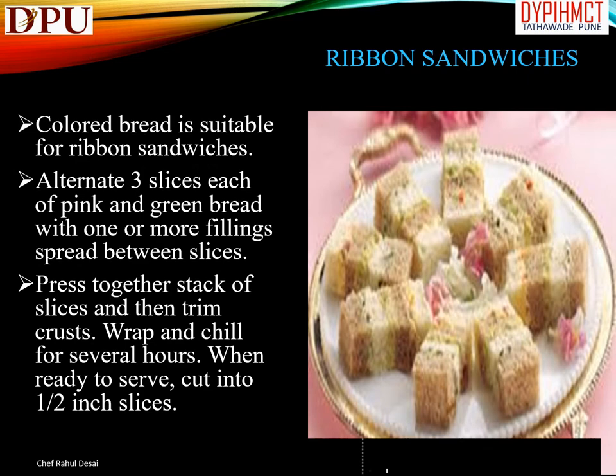A tea sandwich may also be cut into other decorative shapes with a cookie cutter. Ribbon sandwiches: colored bread is suitable for ribbon sandwiches. Alternate three slices each of pink and green bread with one or more fillings spread between slices. Press together the stack of slices, then trim crusts, wrap, and chill for several hours. When ready to serve, cut into one-half inch slices.